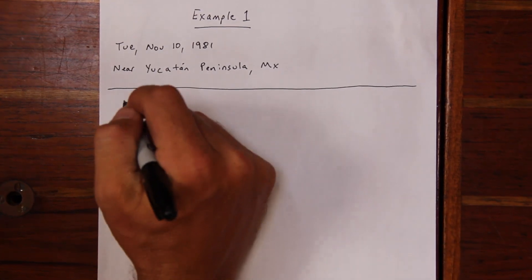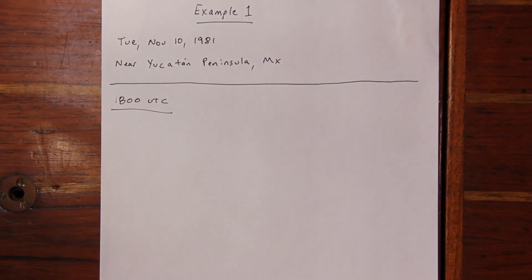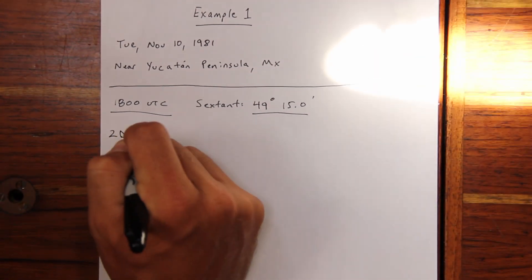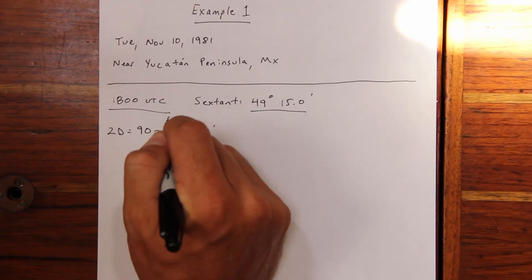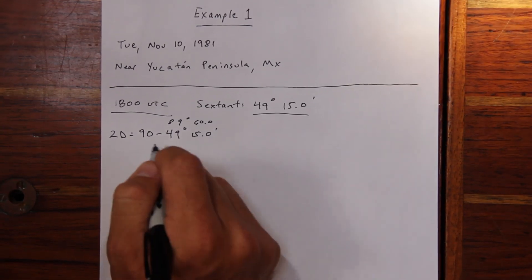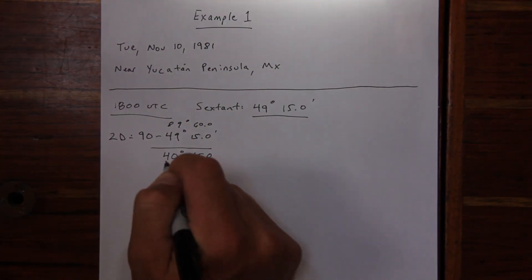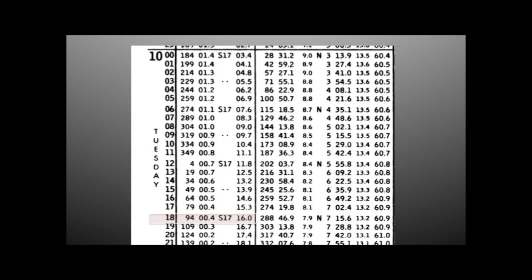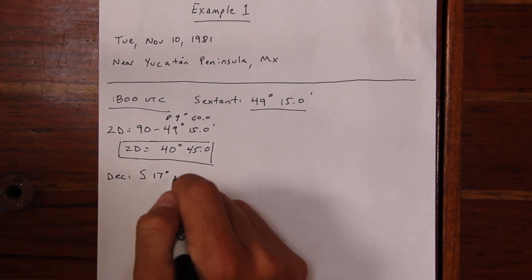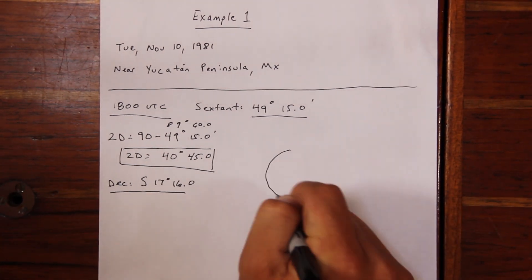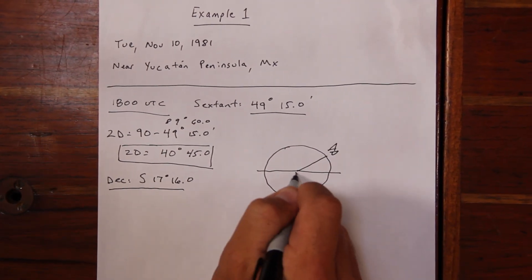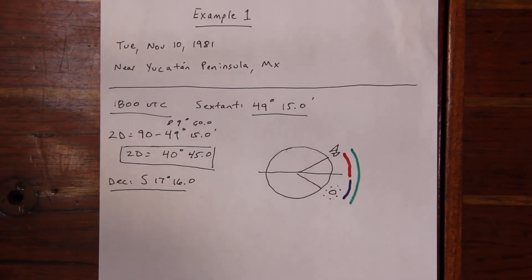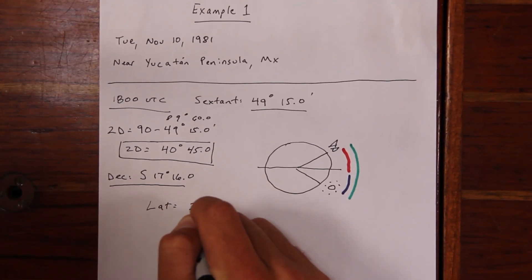All our example problems use the 1981 Nautical Almanac for consistency. In the first example, we're near the Yucatan Peninsula in Mexico in the northern hemisphere. The time is 1800 UTC and our sextant reads 49 degrees and 15 minutes. The first step is to calculate zenith distance, which is 90 degrees minus our sextant height — using a trick of converting 90 degrees to 89 degrees and 60 minutes makes the math easy. We come up with 40 degrees and 45 minutes for zenith distance. We then pull the declination from the Nautical Almanac: south 17 degrees and 16 minutes. Drawing our diagram, we find we're in the opposite hemisphere from the sun, so latitude equals zenith distance minus declination.